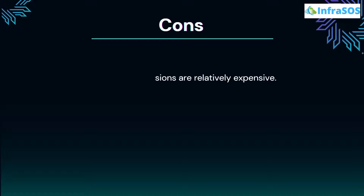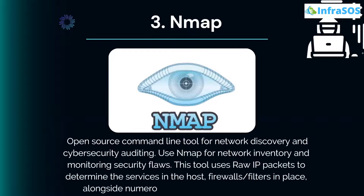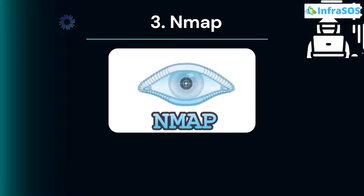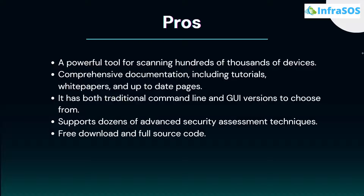Number 3 on our list is Nmap. Nmap is an open-source command-line tool for network discovery and cybersecurity auditing. It is used for network inventory and monitoring security flaws. This tool uses raw IP packets to determine the services in the host, firewalls, and filters in place, alongside numerous other network characteristics. Pros include that it is a powerful tool for scanning hundreds of thousands of devices.